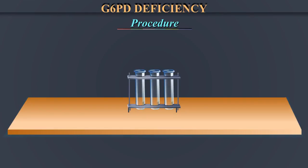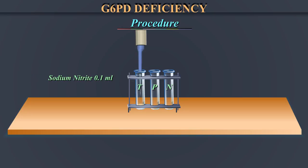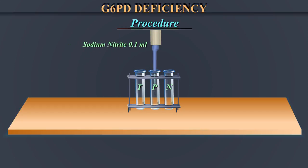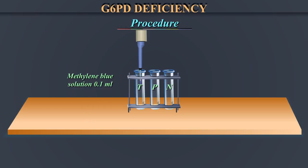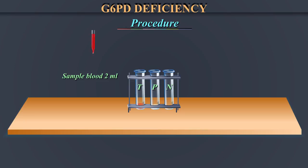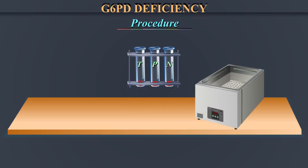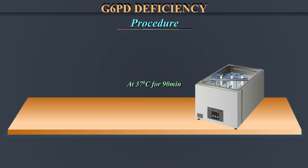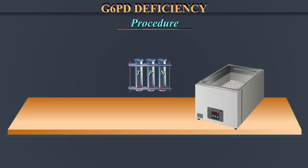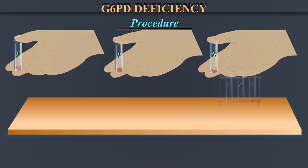Procedure: Take 3 test tubes and label them test, positive control, and negative control. Add the reagents as follows — reagent sodium nitrite: 0.1 ml to the test tube, 0.1 ml to the positive control, and nil to the negative control. Add sample blood: 2 ml to the test, 2 ml to the positive control, and 2 ml to the negative control tubes. Step 2: Place in a water bath at 37°C for 90 minutes. At the end of 90 minutes, take out the tubes and mix by repeated inversions.